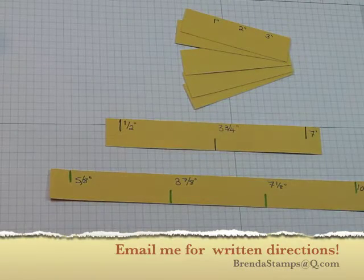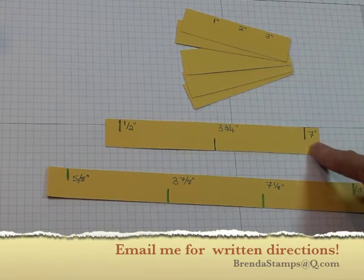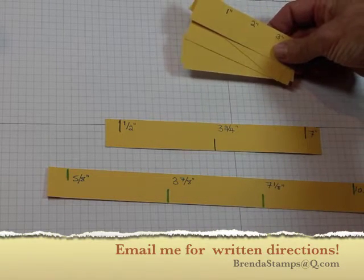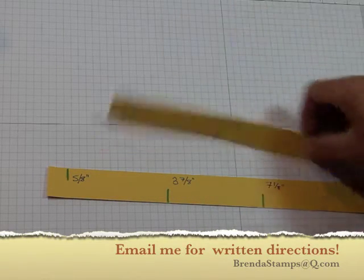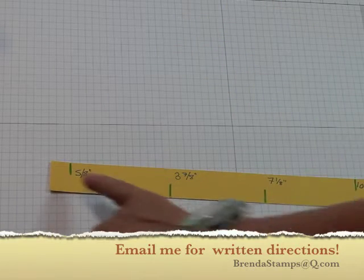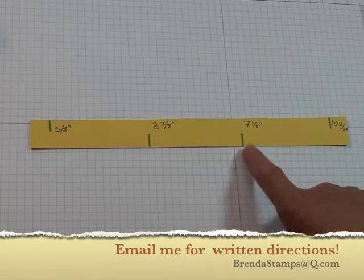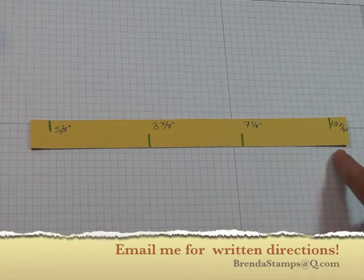So here we go. We have one piece that's eleven inches long, one that's seven and a half, and then five that are four inches long, and they're all one inch wide. So we're going to start with the long piece. You're going to score it at five eighths of an inch, three and seven eighths of an inch, seven and one eighths, and ten and three eighths.